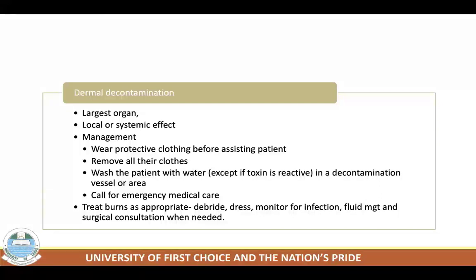The skin is the largest and most superficial organ, often subject to toxin exposure. Because the skin can allow systemic absorption of toxins — including aniline dyes, organophosphates, hydrofluoric acid, nerve agents, phenol, thallium, and organic mercury — both local and systemic effects can occur. The stratum corneum forms an important barrier, but is less effective when wounded, wet, or exposed to highly lipophilic substances. Children's skin is notably more permeable than adults'.